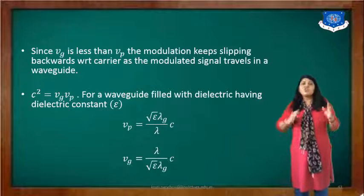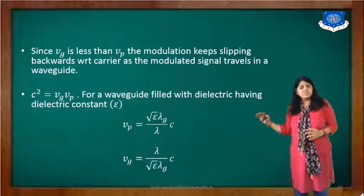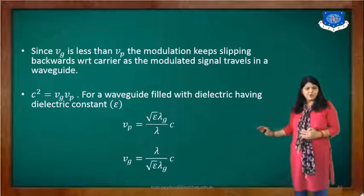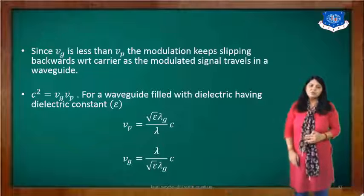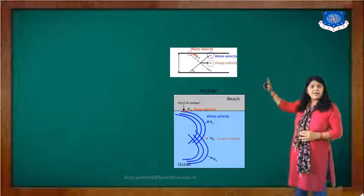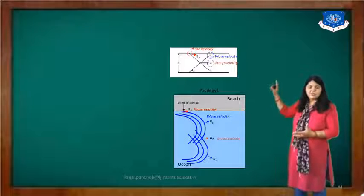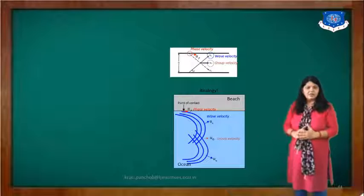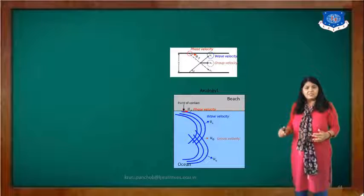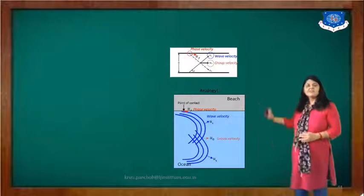For a waveguide filled with a dielectric having dielectric constant epsilon, vp equals square root of epsilon times (lambda g / lambda) times c, and vg equals (lambda / (square root of epsilon times lambda g)) times c. As shown in the diagram, an example involving waves on a beach and ocean illustrates how phase velocity and group velocity differ in their travel.